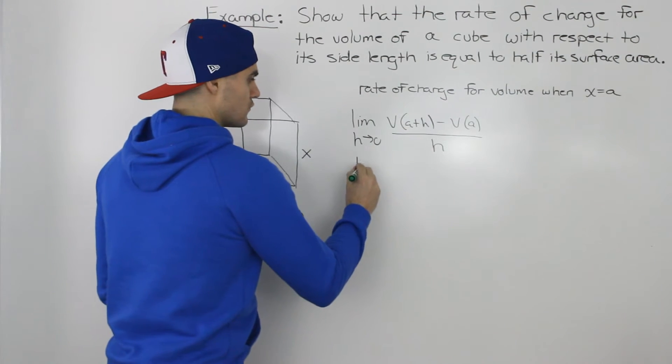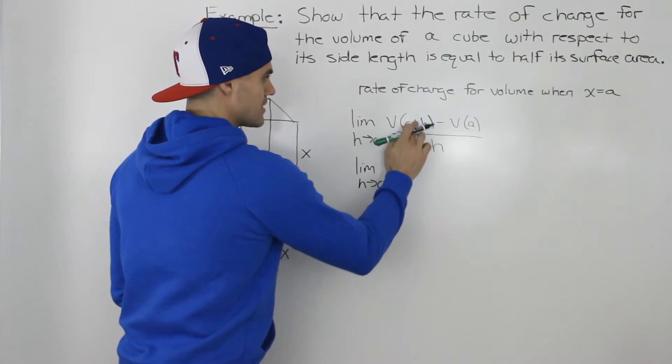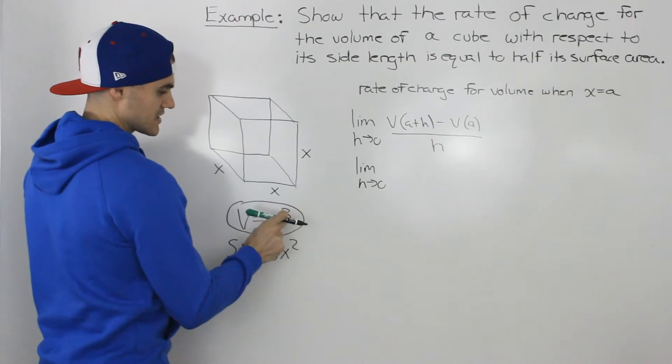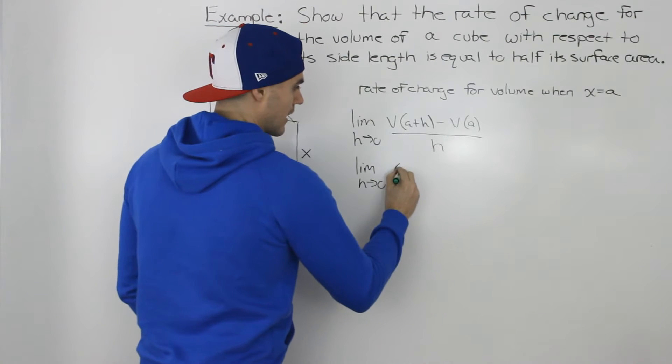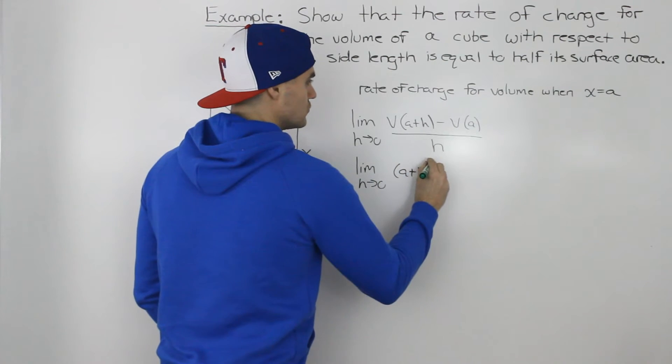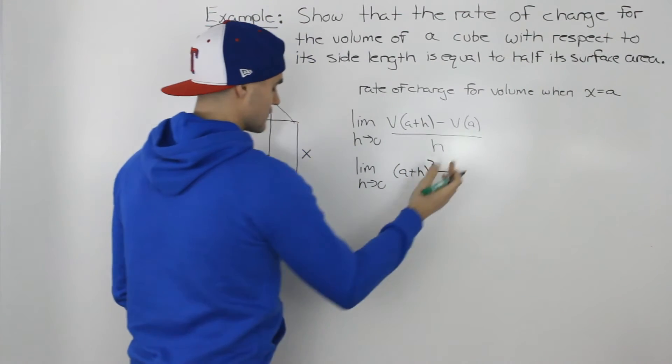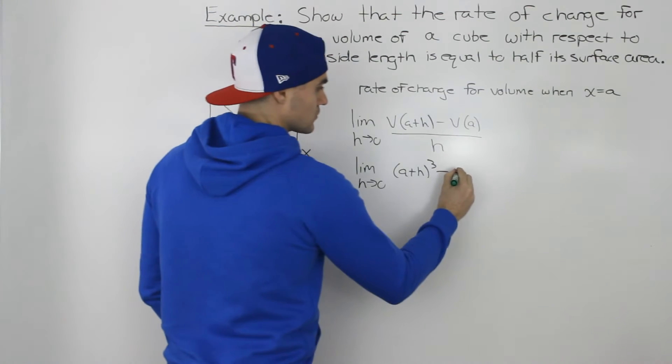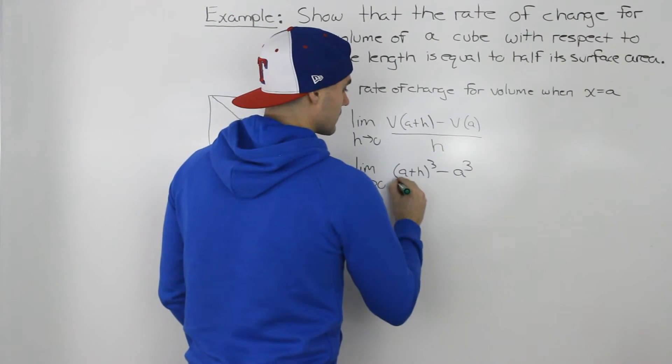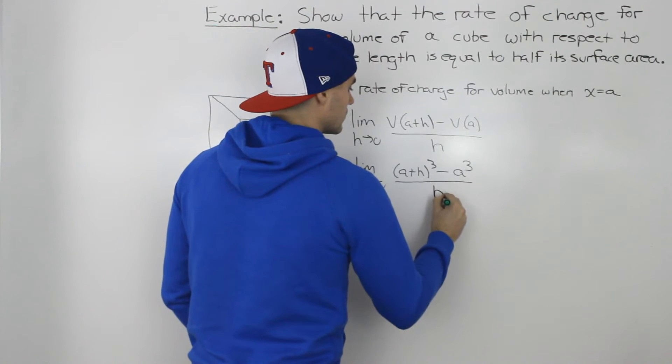So v(a + h), we plug in a plus h for the x and we'll have (a + h) cubed here minus v(a), we plug in a for the x here so we'll have a cubed here. And then this is all over h.